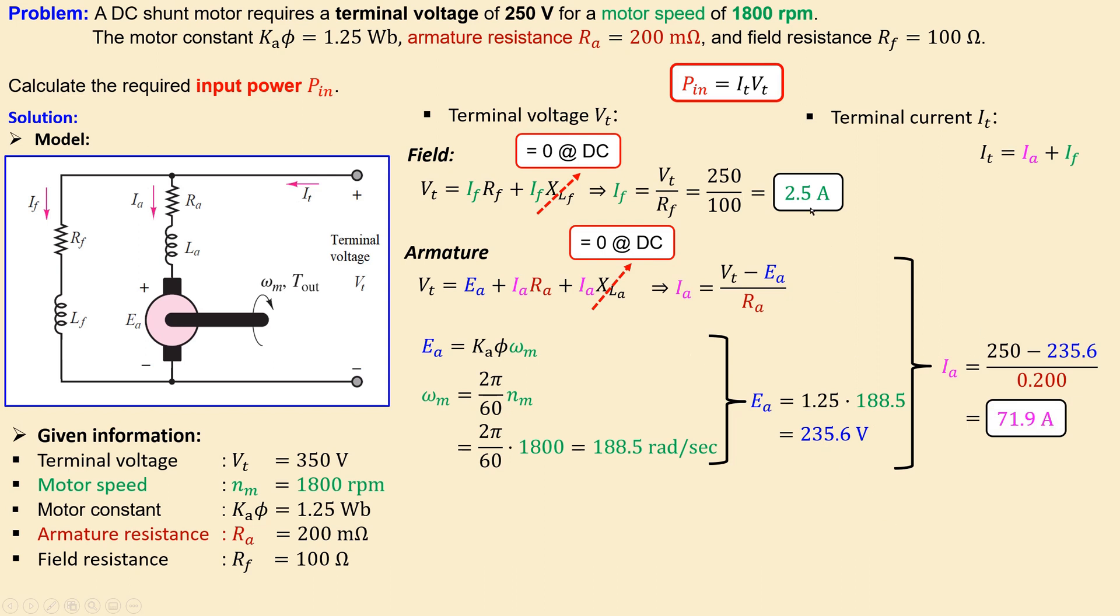So we have the necessary currents for the terminal current. We have the field and also the armature current. Let's then substitute that in here in this expression, again we have 74.4 amperes.